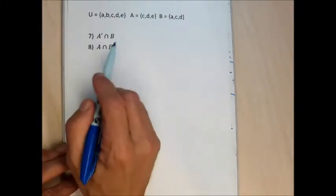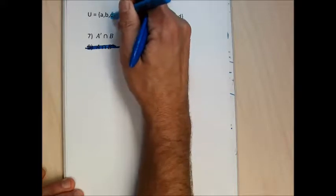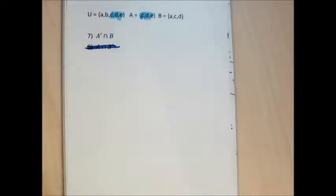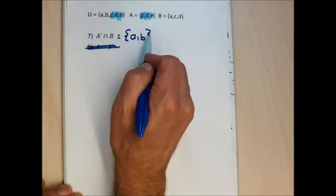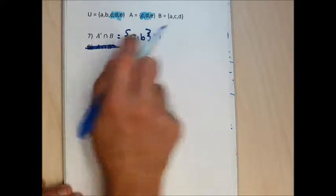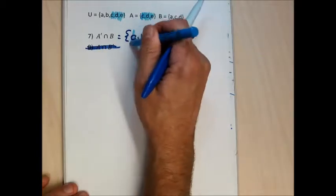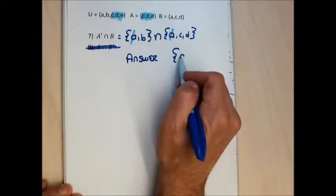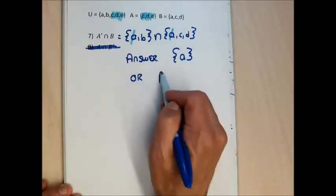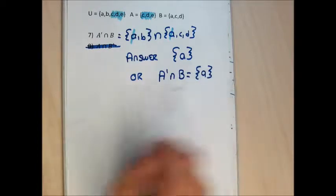For problem 7: A complement intersection B. First I need to find A complement. The complement of A is all letters in the universal set not in set A — which is {A, B, C, D} with A = {A, B, C} — so A complement is the set containing D. I intersect that with set B, which is {A, C, D}. The only letter they have in common is A. My answer for number 7 is the set containing the letter A.